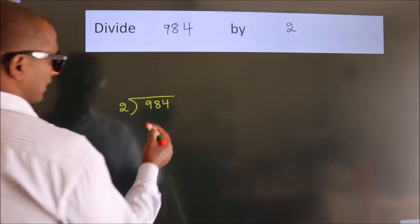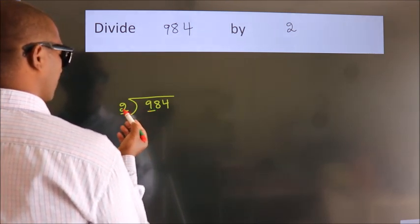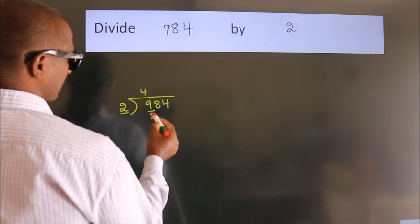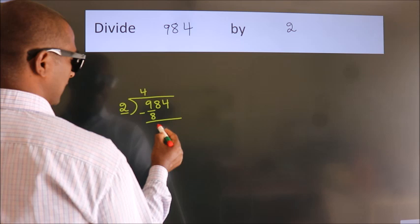here we have 9, here 2. A number close to 9 in the 2 table is 2 fours, 8. Now, we should subtract. We get 1.